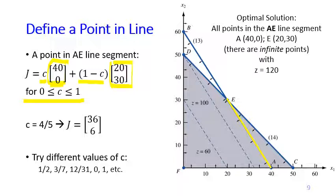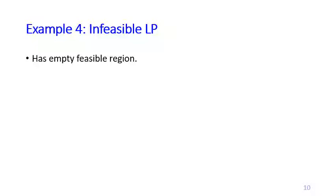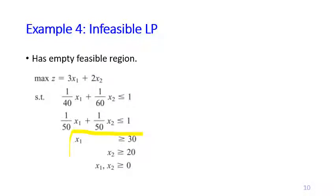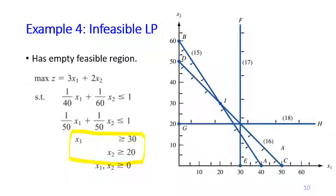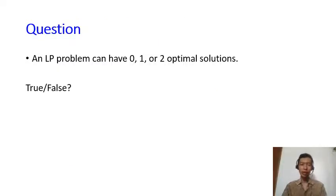Here is another special case: an infeasible linear programming problem. If we add two additional constraints to the previous problem, we end up with no feasible region at all — there is no intersection among all the allowable regions of the constraints. With no feasible solution, there is obviously no optimal solution either.